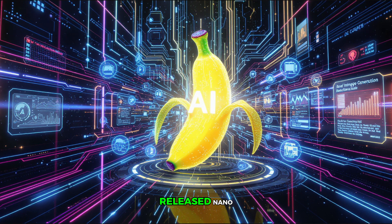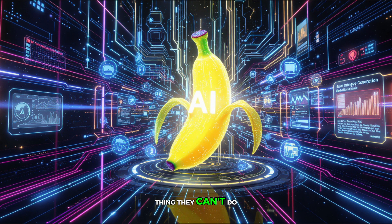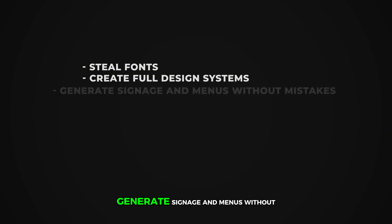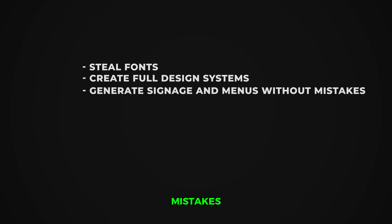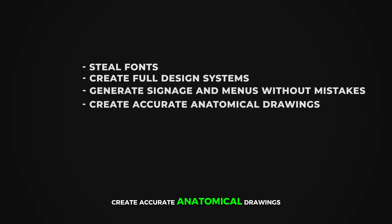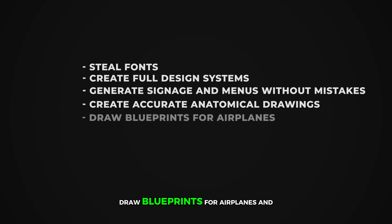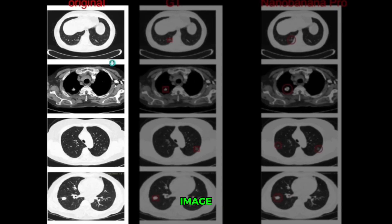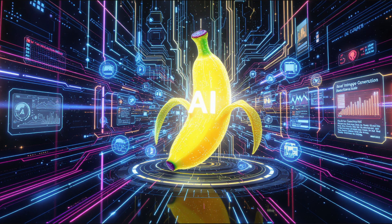Google didn't stop there. They released Nano, Banana, and Pro models. And honestly, I couldn't find a single thing they can't do: steal fonts, create full design systems, generate signage and menus without mistakes, create accurate anatomical drawings, draw blueprints for airplanes, and some of the images are so realistic I couldn't tell if they were fake or real. And if you upload an image and ask it to locate a tumor, it will accurately mark it. The model literally sees, plus thinks, plus creates.